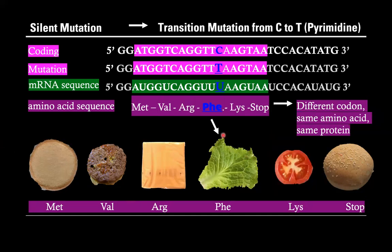A silent mutation is when there is no change seen, because it's a different codon that codes for the same amino acid, therefore giving us the same protein. This would be a transition mutation because cytosine mutates to thymine and they're both pyrimidines.